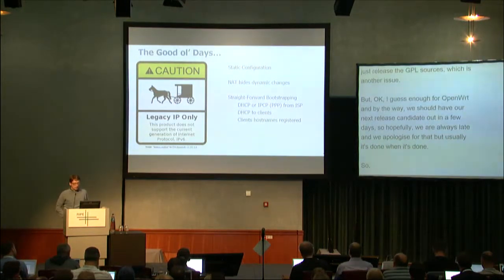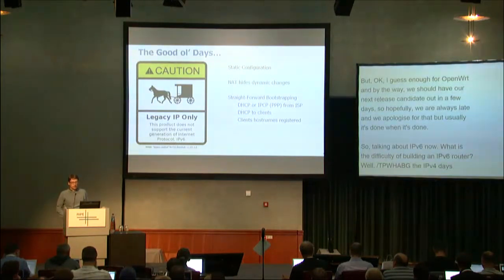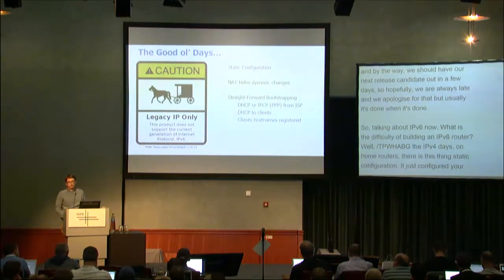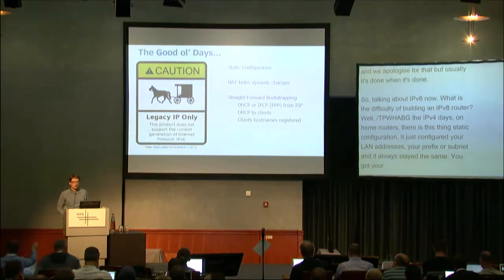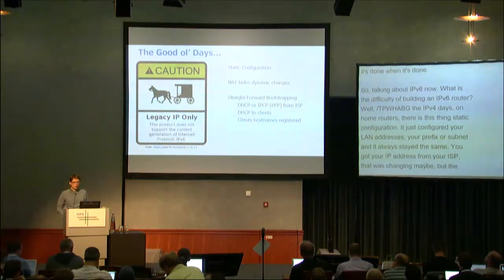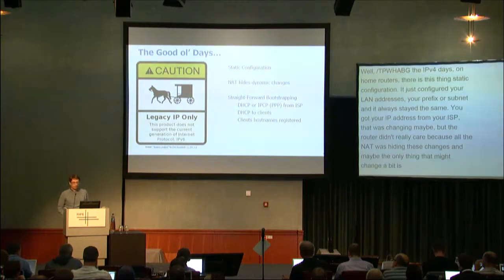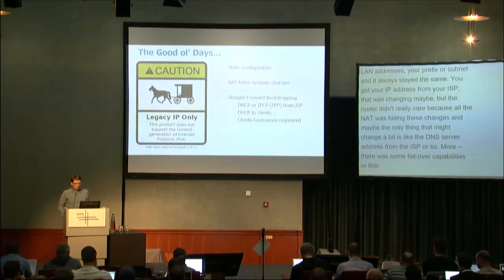So I'm talking about IPv6 now. What's the difficulty of building an IPv6 router? Back in the IPv4 days on home routers, there was this very static configuration. You just configured your LAN addresses, your prefix or subnet, and it always stayed the same. You got your IP address from your ISP that was changing maybe, but the router didn't really care because NAT was hiding those changes. More advanced routers had some failover capabilities, but all in all, it was pretty straightforward.